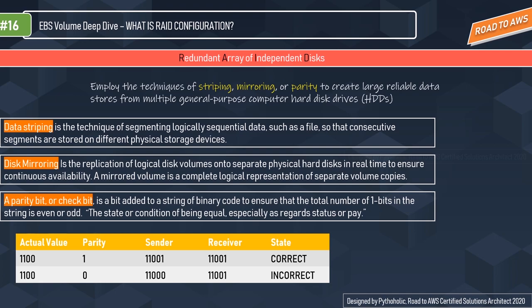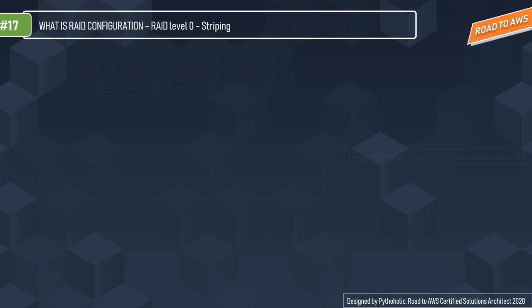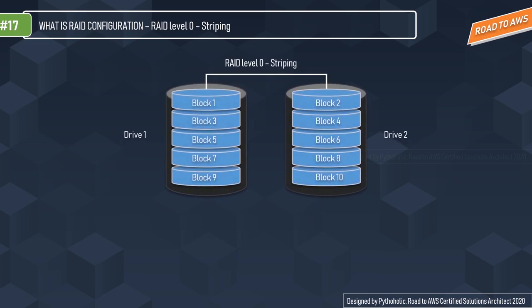There are four RAID configurations we'll discuss. RAID 0 is striping. In a RAID 0 system, data is split into blocks that get written across all the drives in the array. By using at least two disks simultaneously, this offers superior I/O performance. Block 1 goes to disk 1, block 2 to disk 2, and so on — blocks 1 through 6 are divided and stored sequentially across the drives.